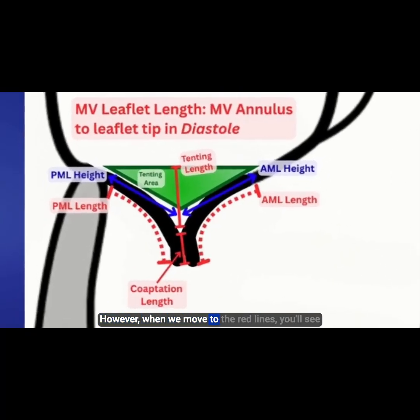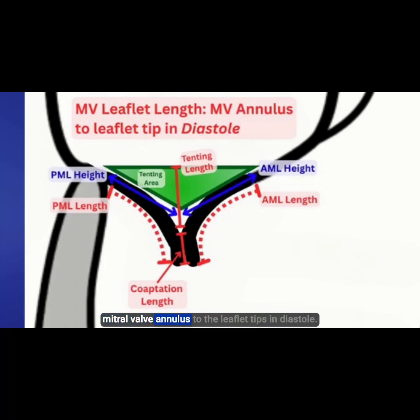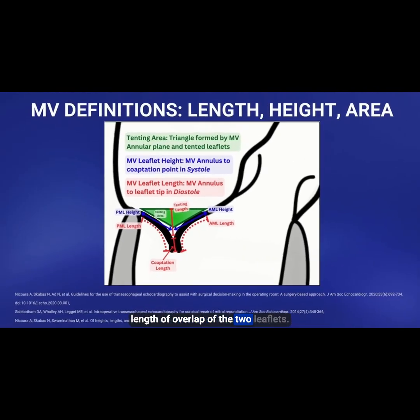When we move to the red lines, the mitral valve leaflet length is measured from the mitral valve annulus to the leaflet tips in diastole. Lastly, coaptation length is the length of overlap of the two leaflets.